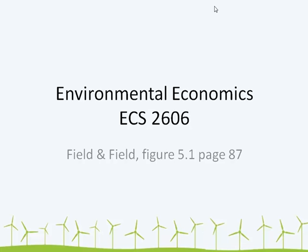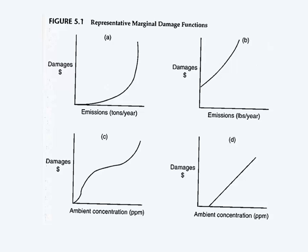We are looking at Figure 5.1 on page 87 of your textbook. This figure tries to show you four different marginal damage functions just to illustrate that the damage inflicted by different types of pollutants aren't the same.